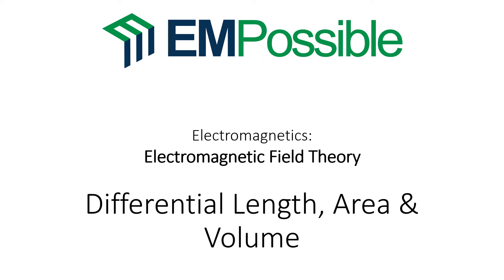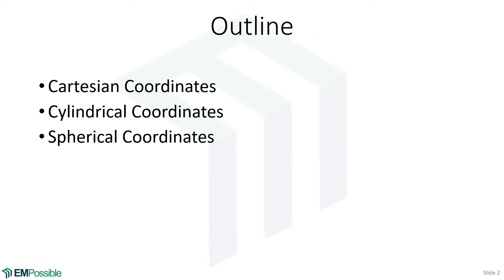Differential length, area, and volume. We will talk about differential length, area, and volumes in all three of the coordinate systems we've been discussing so far: Cartesian, cylindrical, and spherical. We need these any time we are doing integrations. If we're following along some kind of path, we'll be using the differential length. If we're integrating over a surface, we will use the differential surfaces. And if we're integrating over a volume, we will use the differential volumes. So it's very important to understand these things.